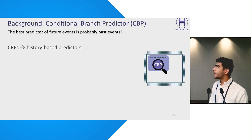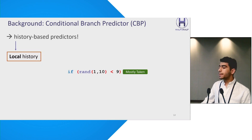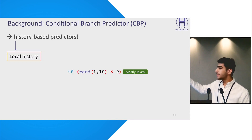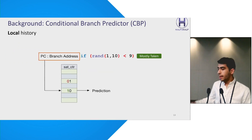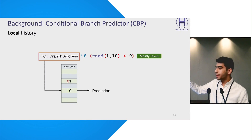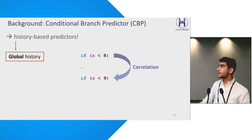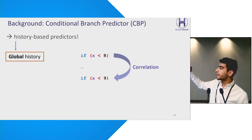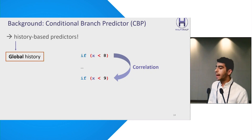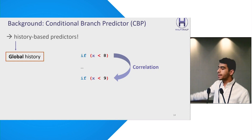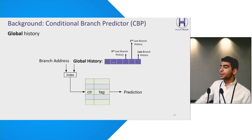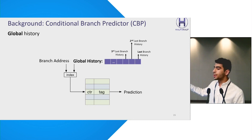Branch predictors use the history of past events to predict future events. The first type of history is local history, where the prediction of a branch is based on its past occurrences. For instance, if a branch is biased towards the taken direction, the local predictor will predict it as taken. A simple local predictor uses the branch address to index a table which stores the predictions. On the other hand, global history can capture correlations between different branches. Consider two branches where the direction of the second branch is influenced by the outcome of the first — if the first branch is true, the second branch is also predicted as true. Global predictors typically use a combined index of branch address and global history for making predictions.